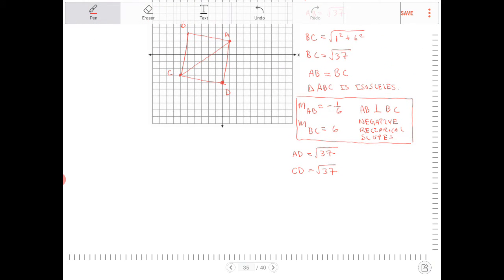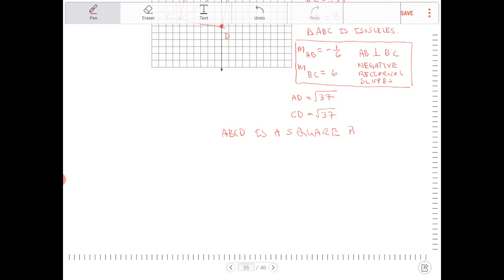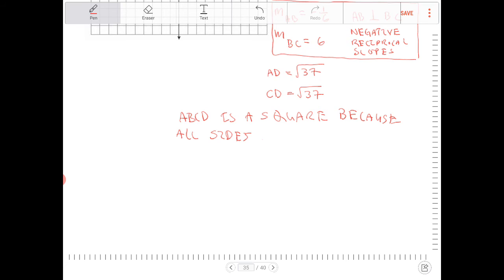So ABCD is a square because all sides are congruent and there is one right angle.